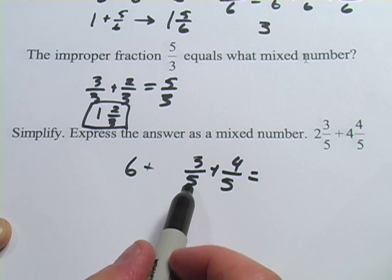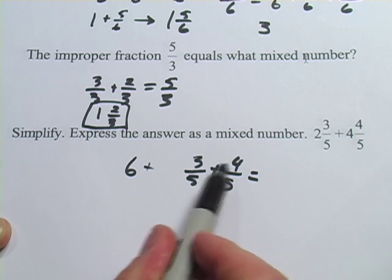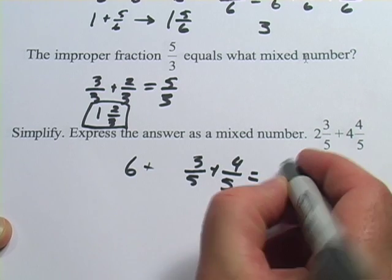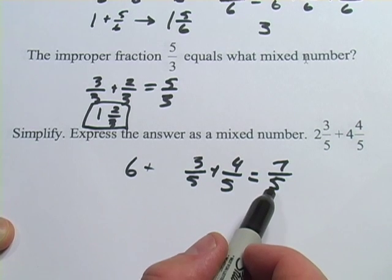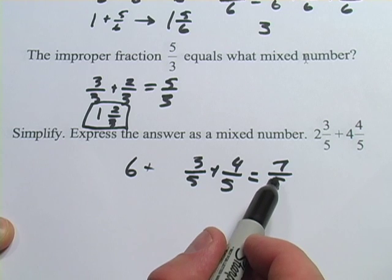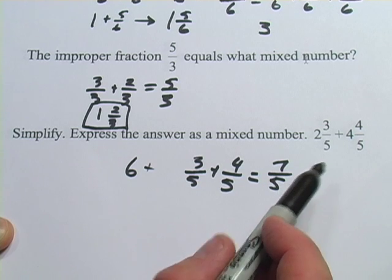To add fractions, as long as the denominators are the same, you just add across the top. 3 plus 4 is 7 fifths. But we've got a little bit of a problem here because we've come up with an improper fraction. So I need to convert that to a mixed numeral, a mixed number.